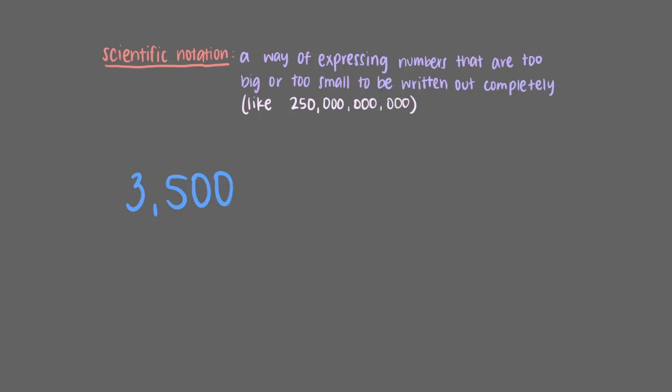3,500 written in scientific notation is 3.5 times 10 to the third power. There's a decimal at the end of 3,500 and we want to move this decimal to the left until we have a number between 1 and 10. We move the decimal point 3 spaces to the left to get 3.5.